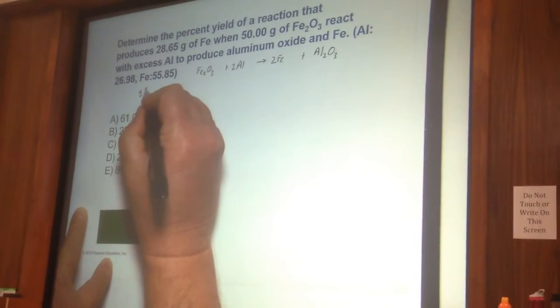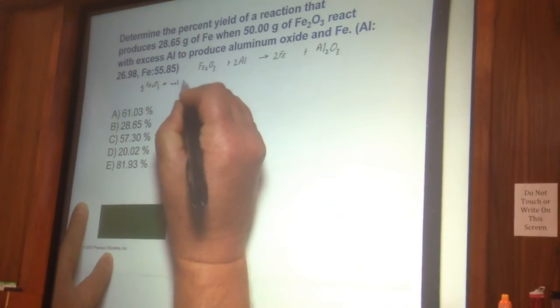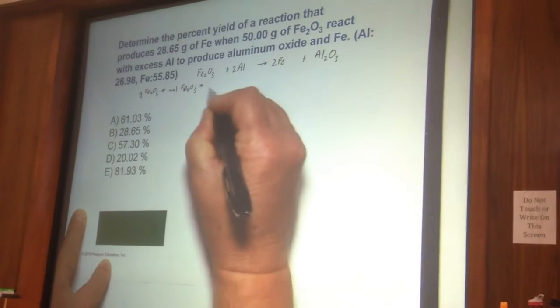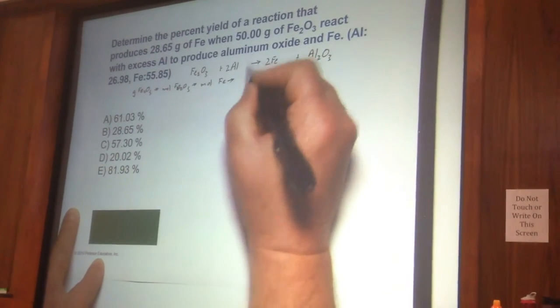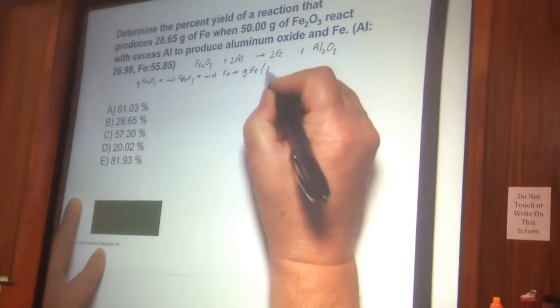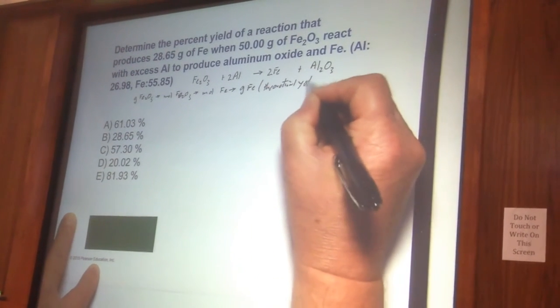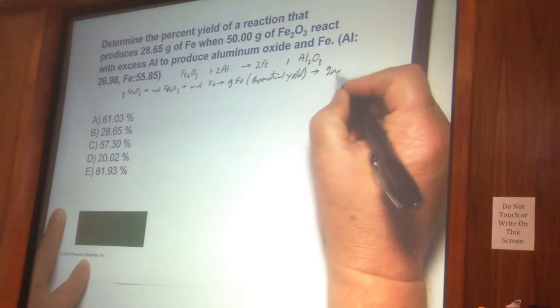So we can go from grams Fe2O3 to mole Fe2O3 to mole Fe to grams Fe. Now we're going to set up the yield calculation, and then we combine that into our actual yield and get the percent yield.